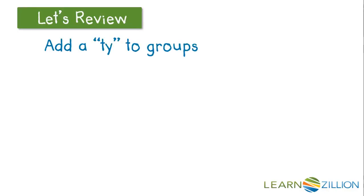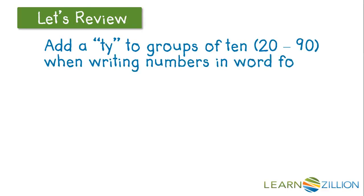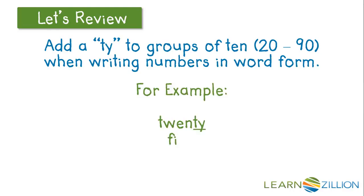Let's also review the importance of adding a -ty to groups of ten when we talk about numbers 20 through 90 when writing numbers in word form. For example, 20, 50, and 90 all contain a -ty.